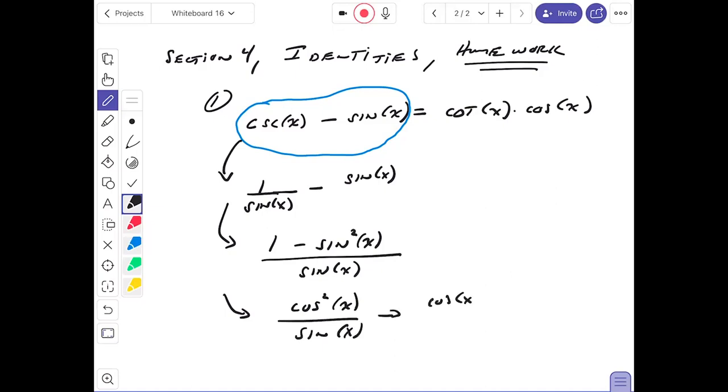I'm going to combine this into one fraction by getting a common denominator. Here we have (1 - sin²(x))/sin(x). I recognize 1 - sin² as being cos². This is cos(x)·cos(x) divided by sin(x). Cos/sin is cotangent times cos(x). We show what we're supposed to show, QED. You could have picked the other side, not a problem.